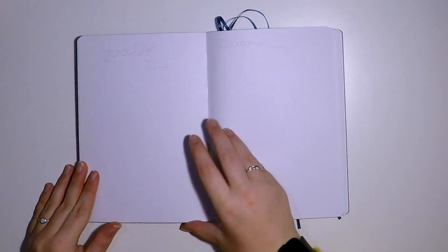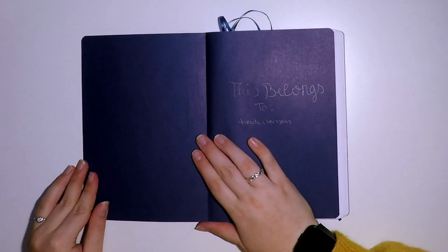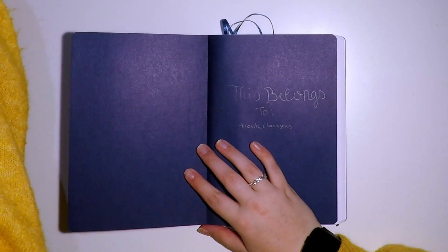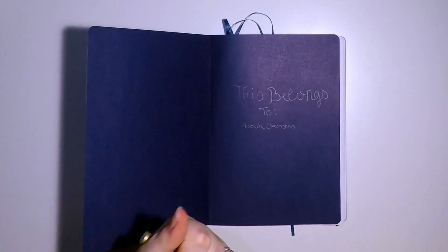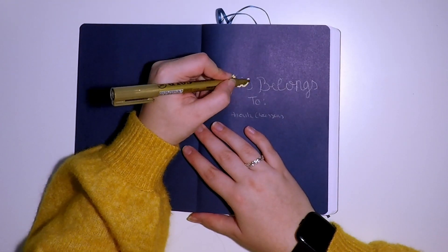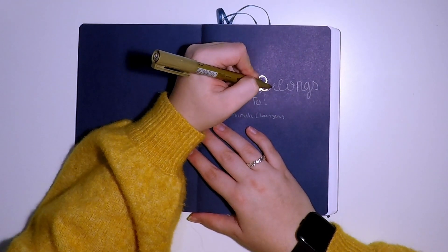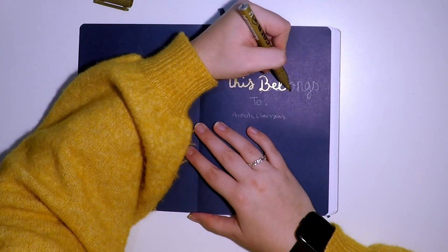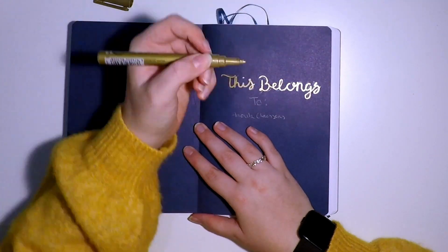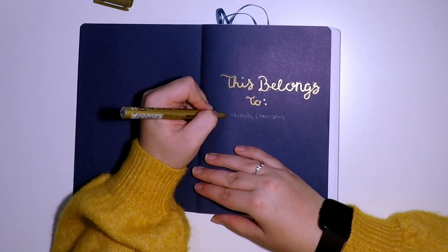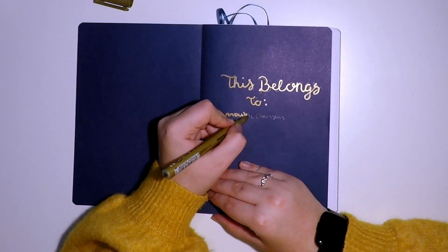After that, I went back to the front page of my book. You see all those little bullet journals have this first page where it says 'this belongs to.' Well, mine didn't have that, so I created my own. And because the cover was blue and gold, I used a gold pen to recreate the cover of my journal.